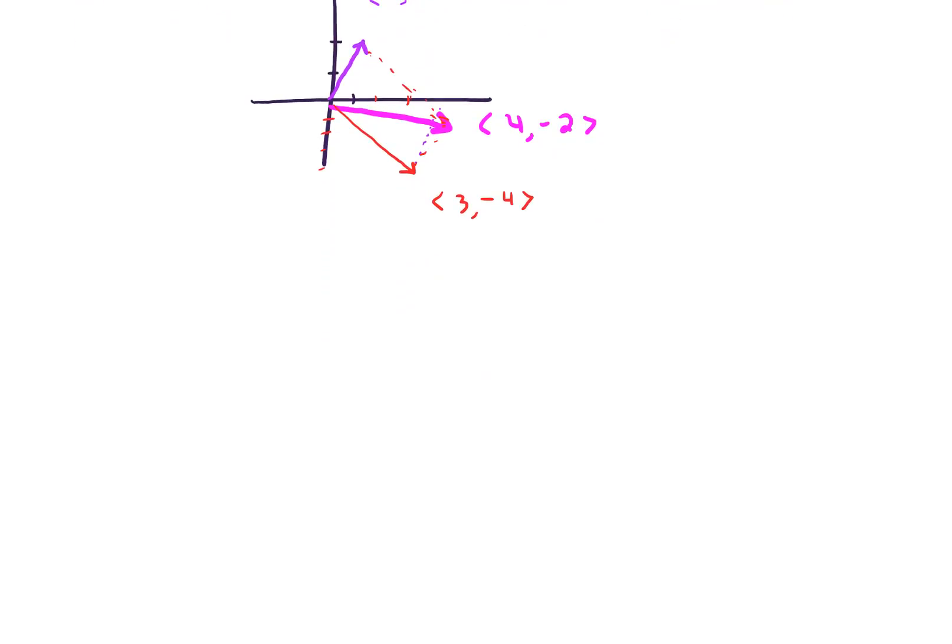The other operation that we want to talk about here is called scalar multiplication. So definition, let vector u with components u1, u2, all the way up through un. And we'll use angled brackets or parentheses. Again, depending on your textbook, you'll see both. So let that be a vector in R^n. So again, this notation is nth dimensional real space.